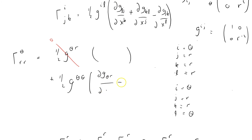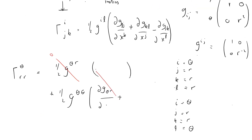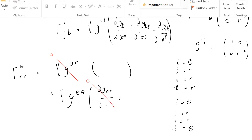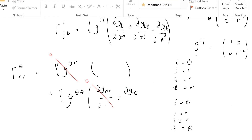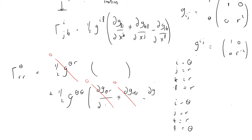The last term is minus ∂g_rr/∂x^l. Since g_rr equals 1, it's a constant, so that derivative is also zero. All terms vanish, and Γ^θ_rr = 0. These cancellations are quite subtle — they're not trivially 2 minus 2 equals zero. They bring together different aspects of the metric tensor, differentiation, and summation.